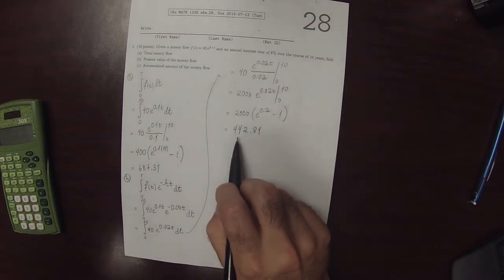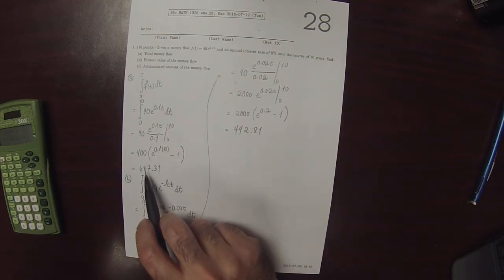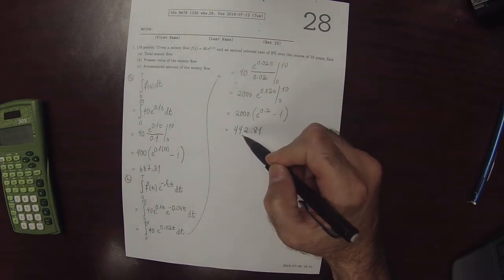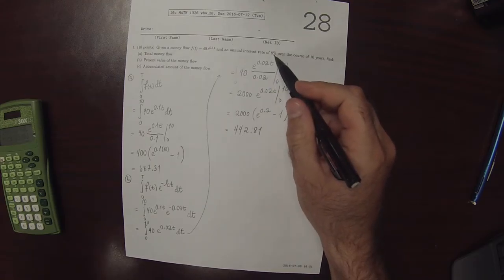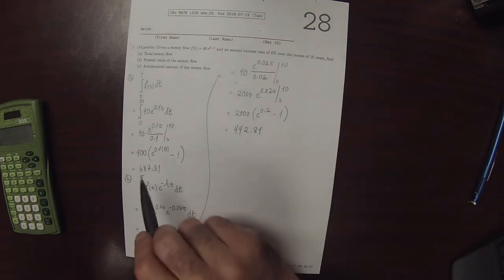So this number is the present value of the money flow. The total value is 687 dollars if we were to do this over the course of 10 years. 442 is the amount of money that we could take right now and deposit into an 8% account, and at the end of 10 years we would have 687 dollars.